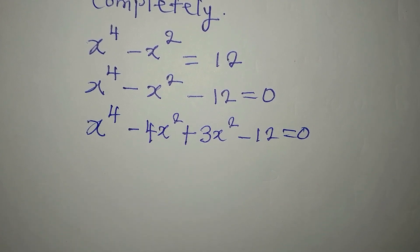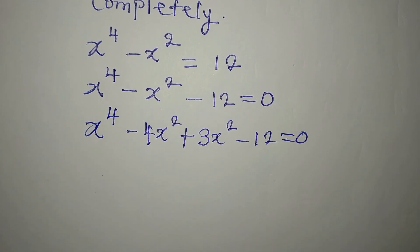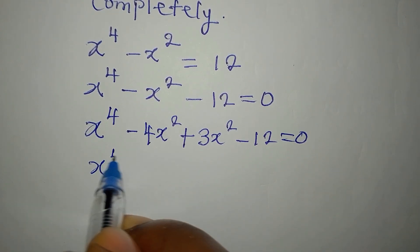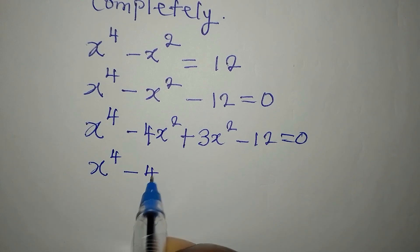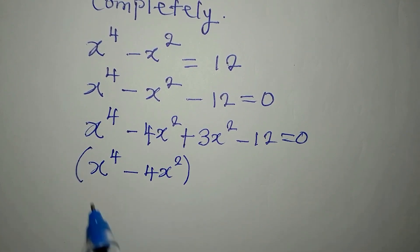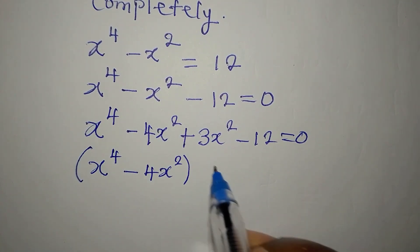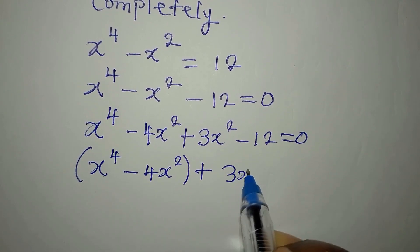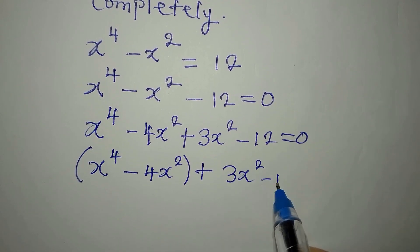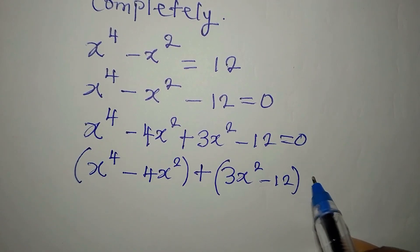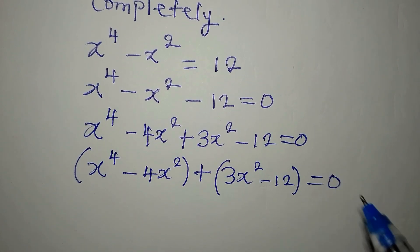The next thing I will do is to group into two and factorize. The first group will be x to the power of 4 minus 4x squared, then plus we have 3x squared minus 12. I will now factorize each group, and everything is equal to 0.